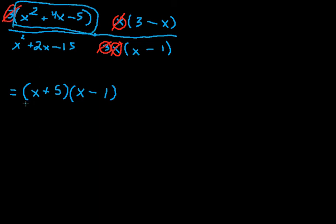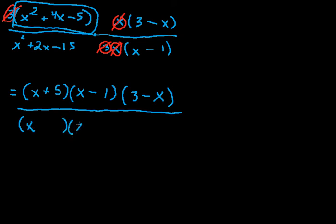I factored that out. Now, we're going to keep the 3 minus x right here, because that's not going to change. We'll draw our bar. And then x squared plus 2x minus 15. Now we need two numbers that multiply to 15 and add to positive 2. So again, x, x. 5 and 3 multiply to 15. We want them to add to 2. So once again, we're going to have a plus 5 and a minus 3. And then over here, we're just going to keep the x minus 1.